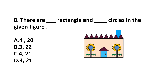Question number 8. There are dash rectangles and dash circles in the given figure. Counting rectangles: there are 4 rectangles. Counting circles: each flower has 9 yellow circles outside and 1 inside, making 10 circles per flower. Two flowers give 20, plus 1 more circle, totalling 21 circles. Our answer is 4 rectangles and 21 circles — option C.